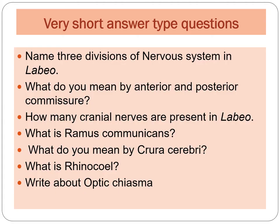First of all, we will take very short answer type questions. The first question of this category is: name three divisions of the nervous system in Labeo. Second question is: what do you mean by anterior and posterior commissure? Next: how many cranial nerves are present in Labeo? Next: what is ramus communicans? Next: what do you mean by crura cerebrae? Next: what is rhinocele? And the last question of this category is: write about optic chiasma.